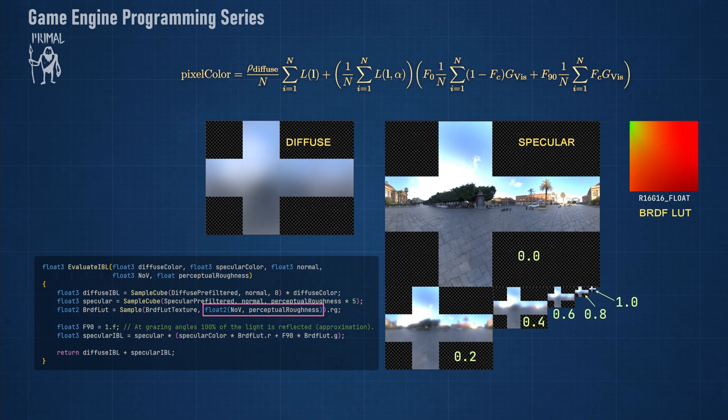Since each pixel in the BRDF lookup texture corresponds to a specific combination of view vector and roughness value, we can use these as UV coordinates to sample from the texture. The specular pixel color is then calculated by simply adding these terms.